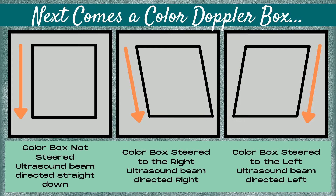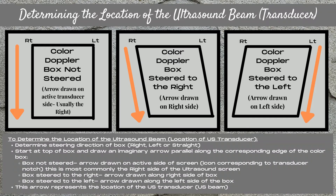The next step in determining direction of flow with Doppler is the color box. The color box populates onto the screen when the color Doppler control is turned on. The color box can be unsteered, meaning the ultrasound beam is directed straight down into the tissue, or it can be steered to the right or to the left. To determine the location of the ultrasound beam, you first need to figure out: is your color box steered?